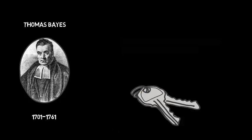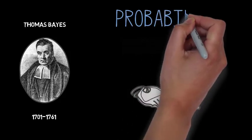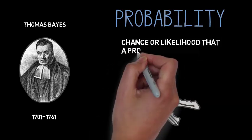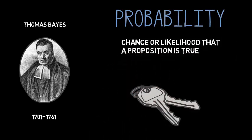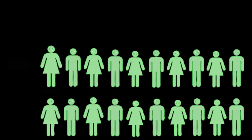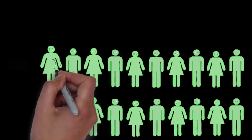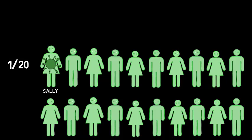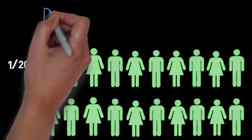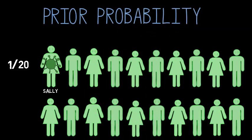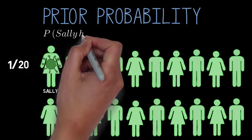In order to understand the theorem, we'll have to understand a little bit about probabilities. The probability of a proposition is the chance or likelihood that that proposition is true. Suppose you know that one student in a class of 20 has the flu, but you don't know who. If you know that Sally is a student in the class, you would say the probability that Sally has the flu is 1 in 20, or 5%, or .05. We can call this your prior probability that Sally has the flu, because it's your probability prior to finding out any new information. As a shorthand, we'll write p of Sally has the flu equals .05.